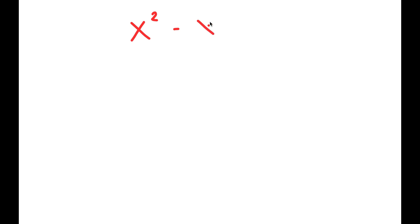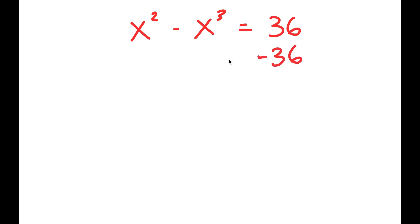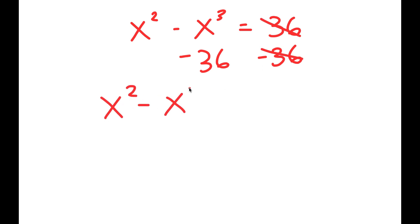In this video, I'm going to solve the equation x to the power of 2 minus x to the power of 3 is equal to 36. To solve this, I'll first start by subtracting 36 on both sides — these two cancel out — and I get x squared minus x cubed minus 36 is equal to 0.